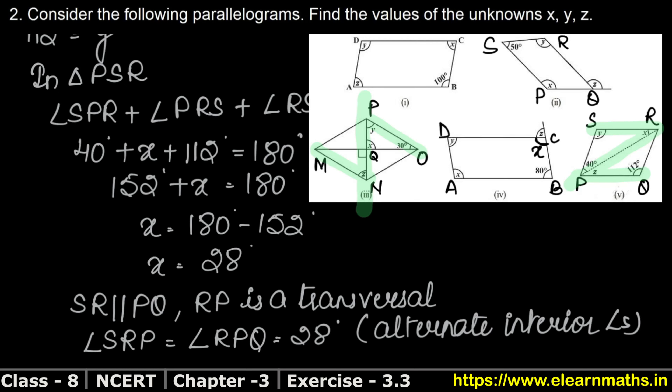When two parallel lines are cut by a transversal, the alternate interior angles are equal. So the value of z equals 28 degrees. That is the answer.